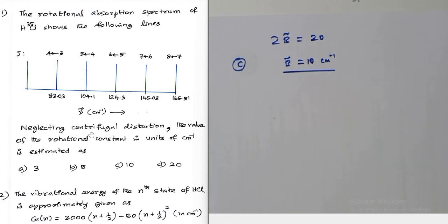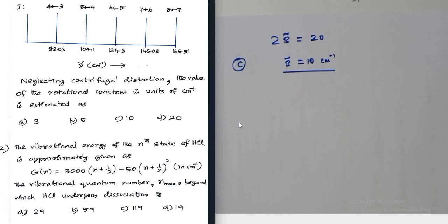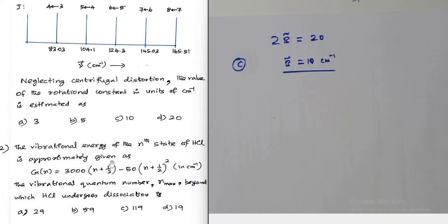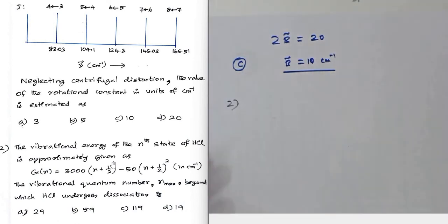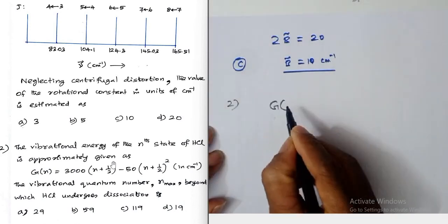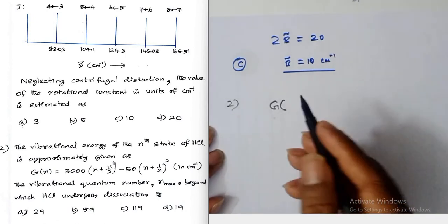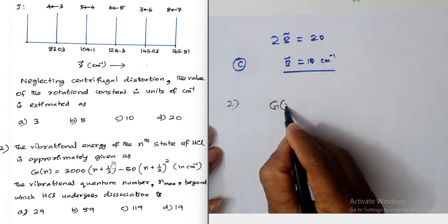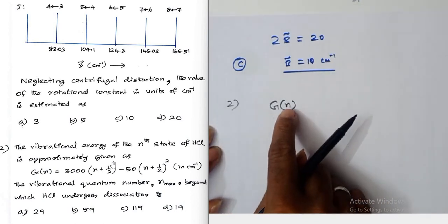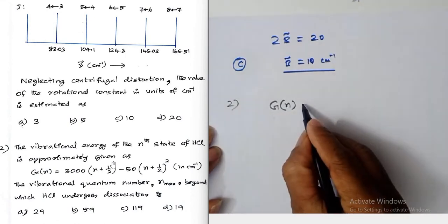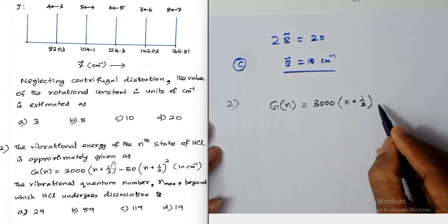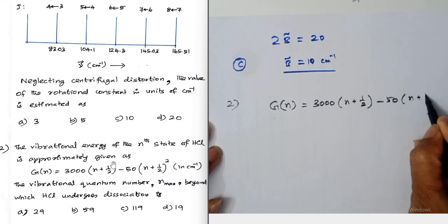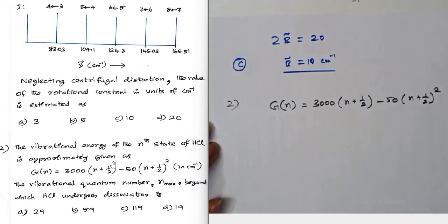The next question from the last CSIR examination: the vibrational energy of the nth state of HCl is approximately given as G(n) = 3000(n + ½) − 50(n + ½)². Here n is used instead of the usual symbol v for the vibrational quantum number.